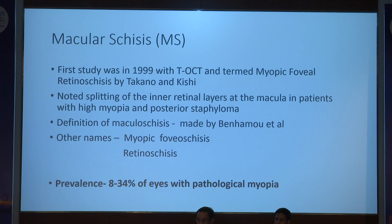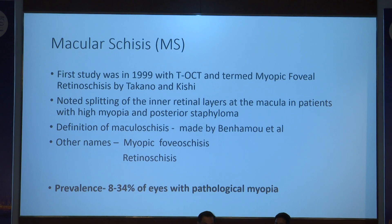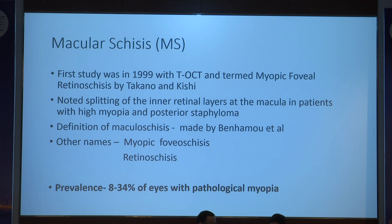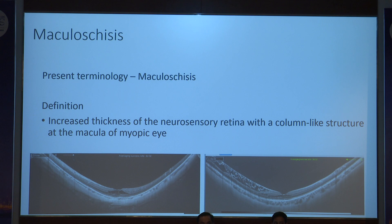Macular schisis was first described by Takano and Kishi in 1999 using time-domain OCT. It is considered as a splitting of the inner retinal layers at the macula in patients with high myopia having a posterior staphyloma. Various terminologies are used: myopic foveoschisis, macular schisis, retinal schisis at the macula. Prevalence is 8% to 34% of eyes in those with pathological myopia. The presently accepted terminology is macular schisis, defined as increased thickness of the neurosensory retina with a column-like structure at the macula of myopic eyes.